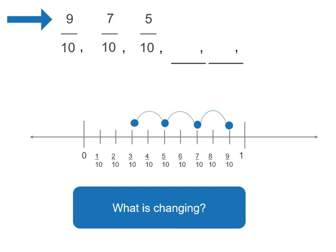So our next number is going to be the same. We're going to decrease by 2 tenths. 5 minus 2 is 3. So we have 3 tenths. And our final number in the pattern, we're going to decrease by 2 tenths again. And we have 1 tenth.